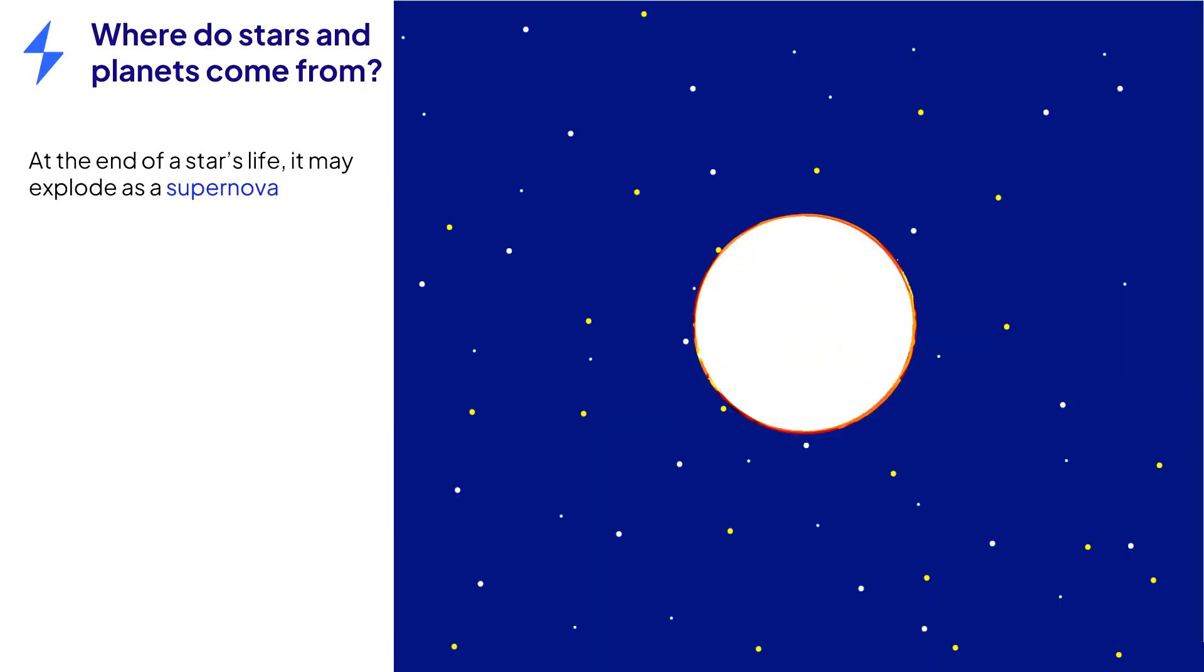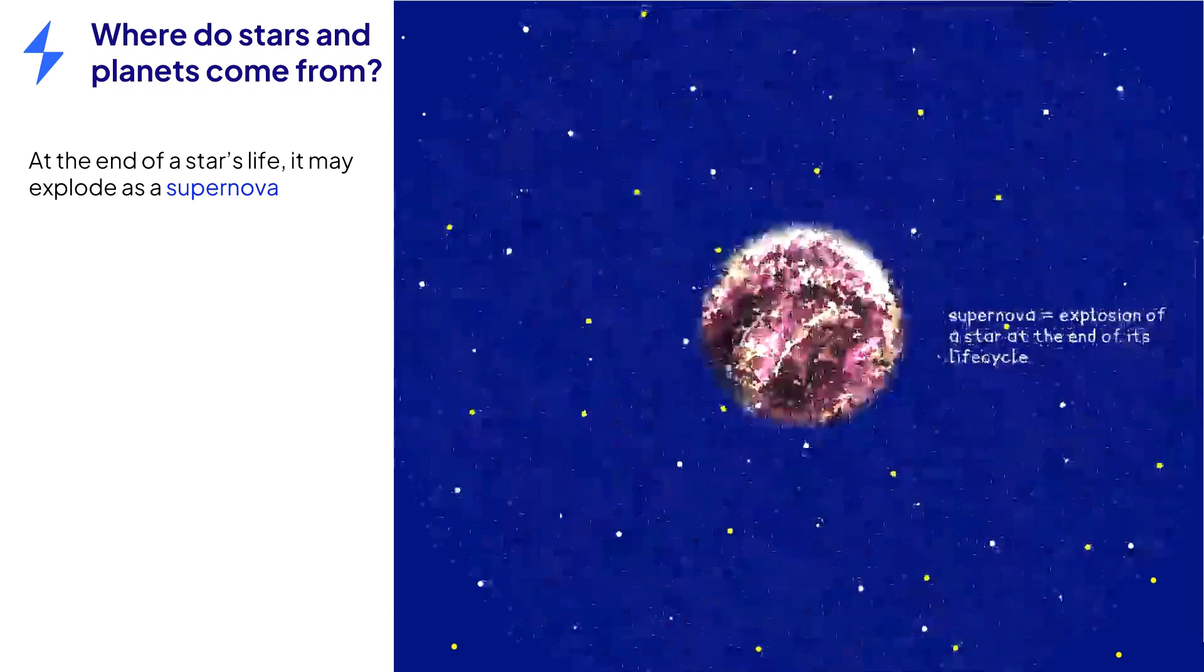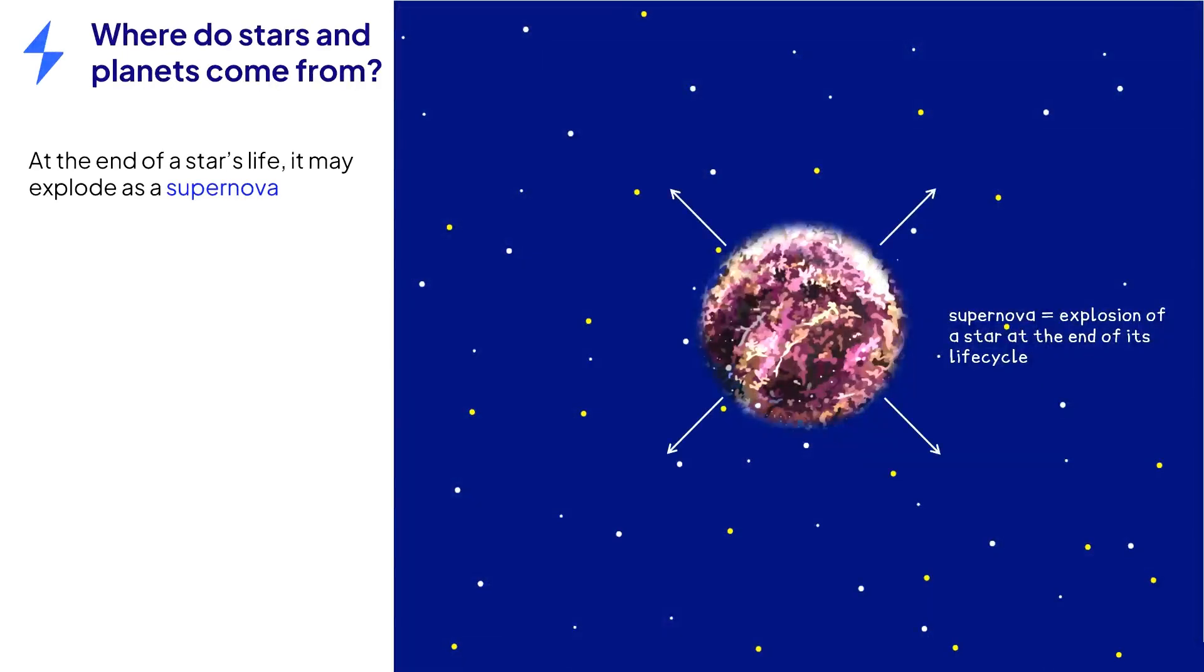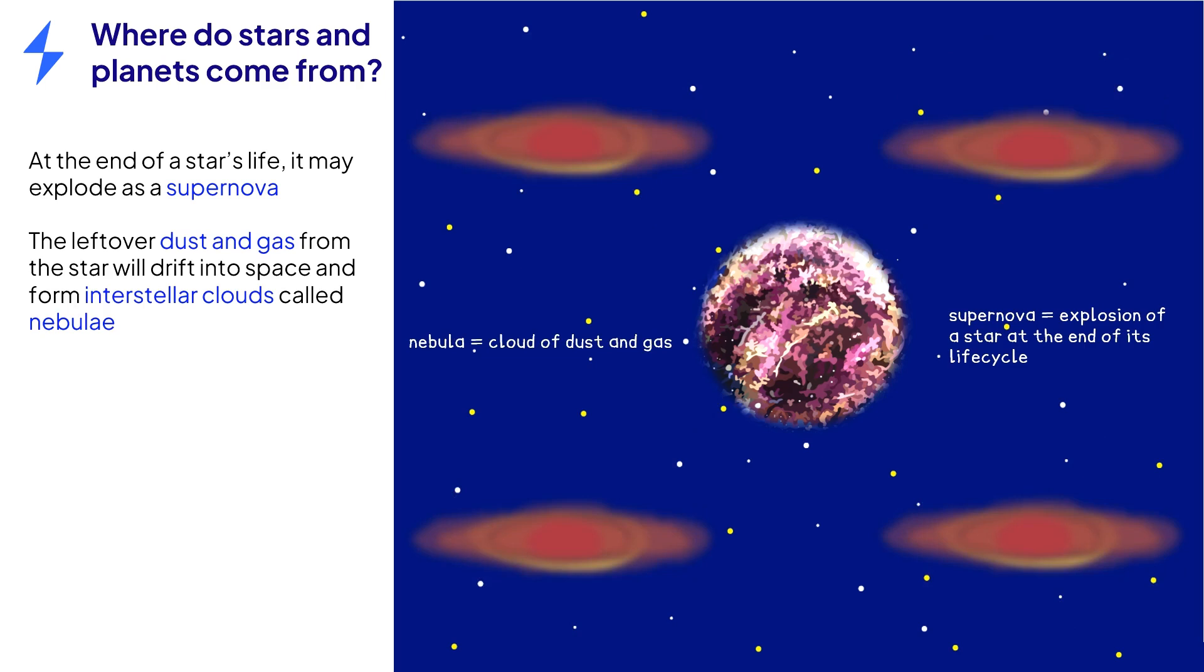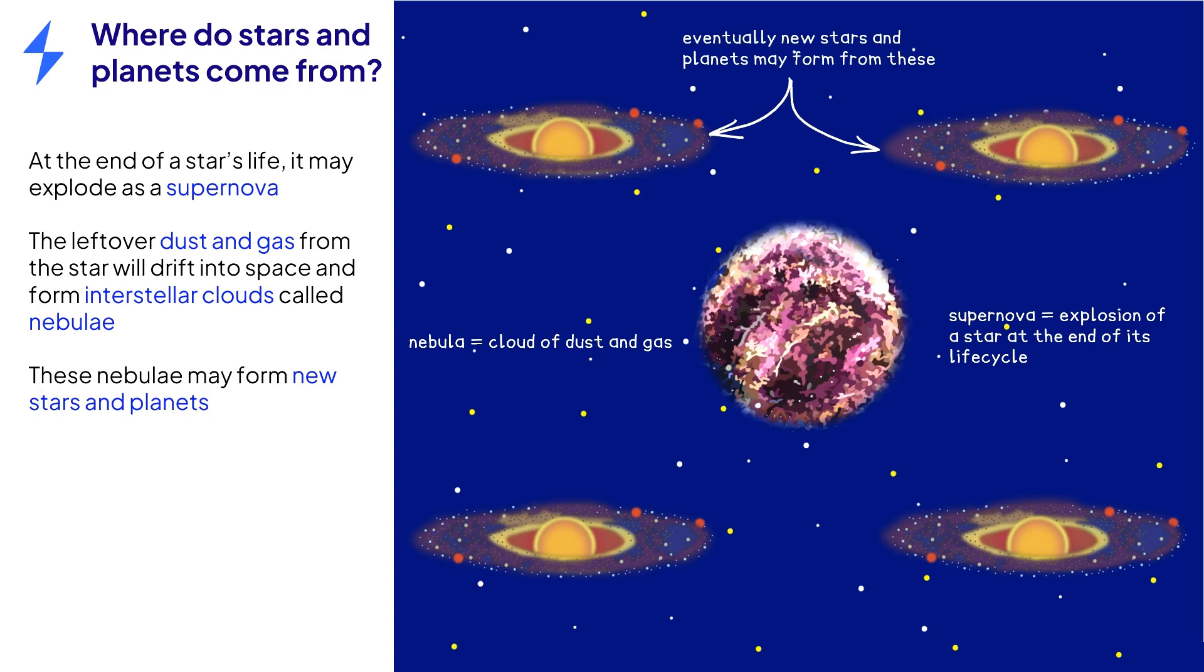A supernova is an explosion that takes place at the end of a star's life. After a supernova explosion, dust and gas shoots out into space to form giant clouds called nebulae. Over time, these nebulae may collapse under gravity and eventually go on to create new stars and planets.